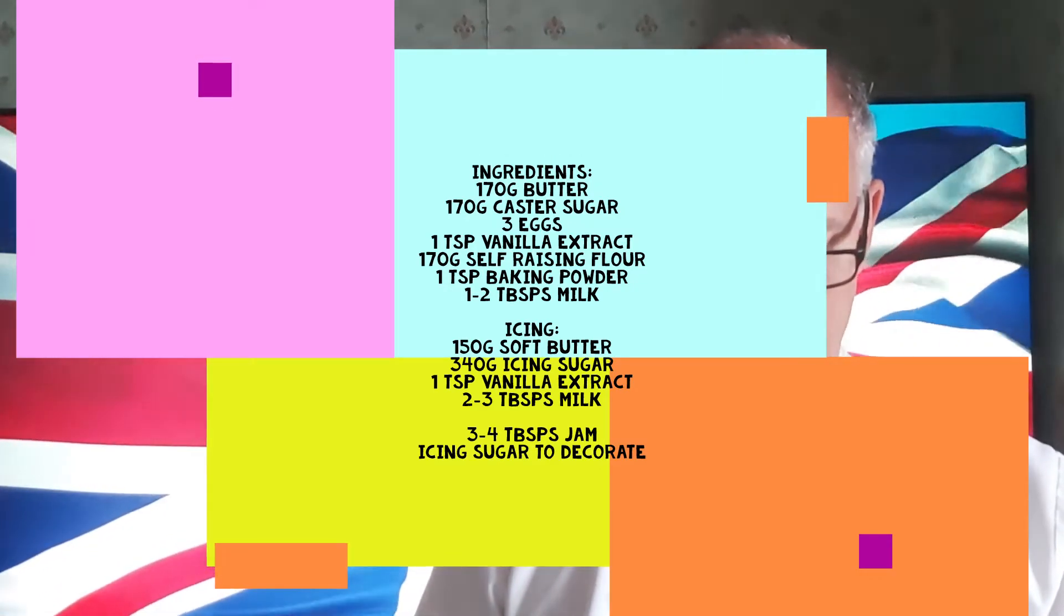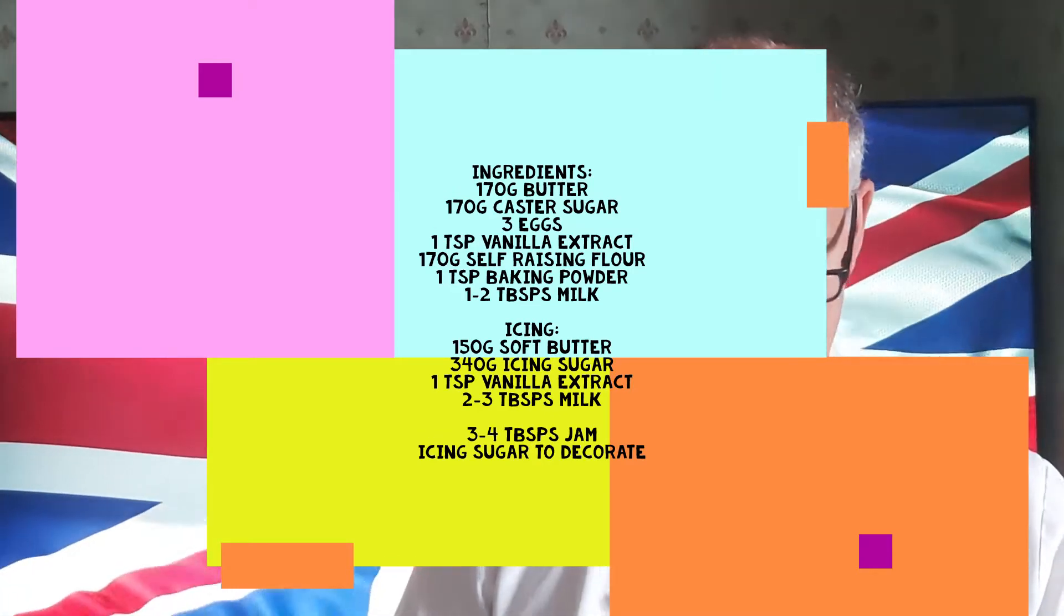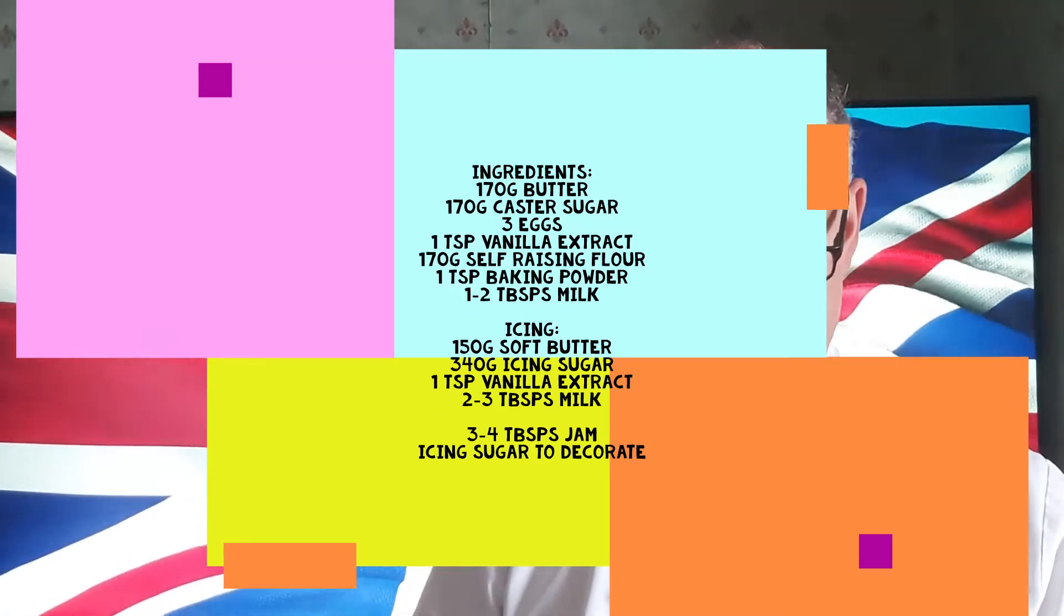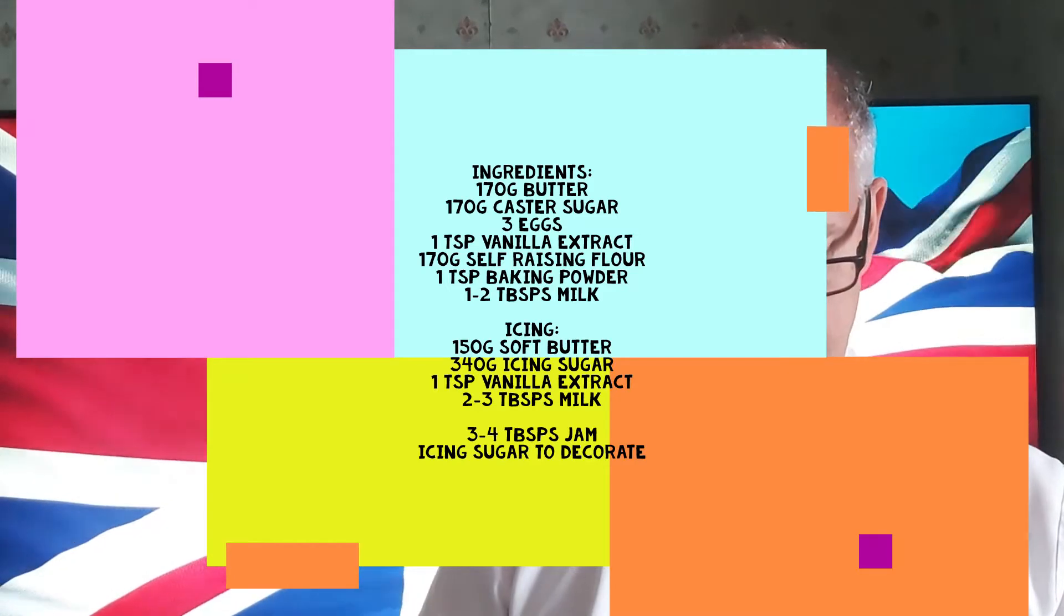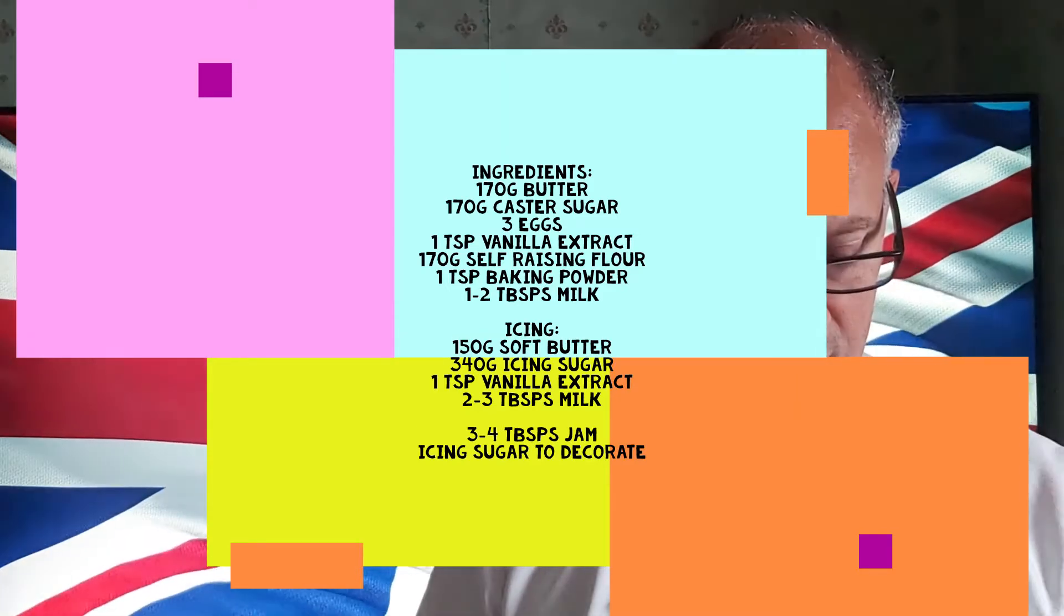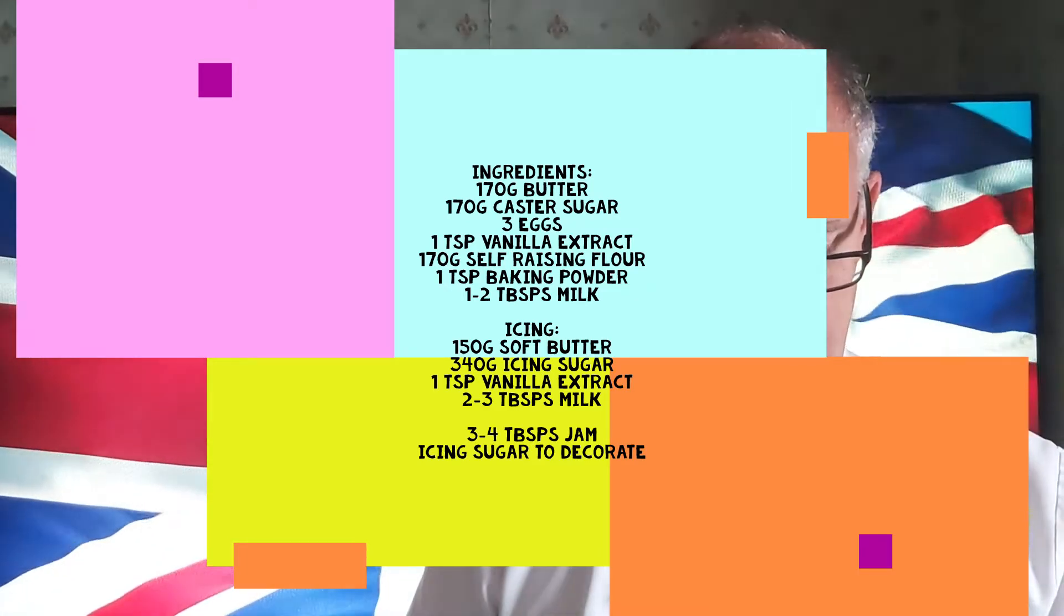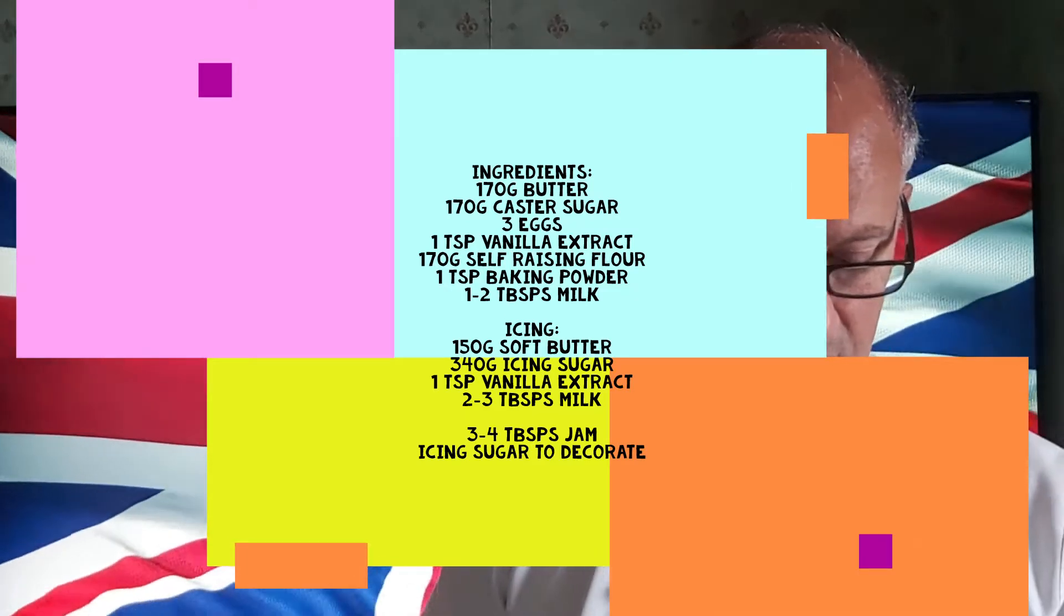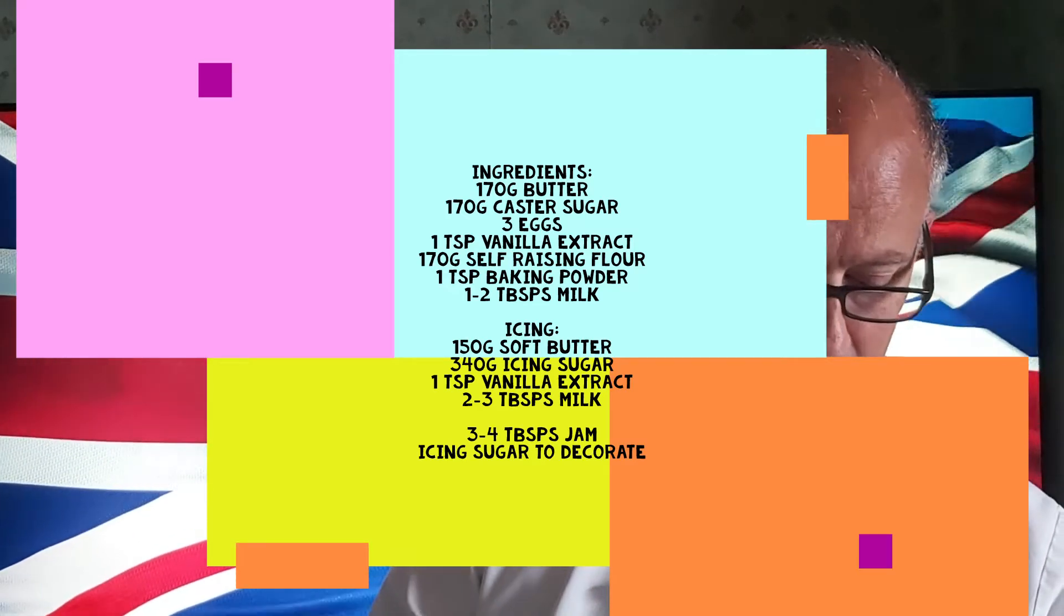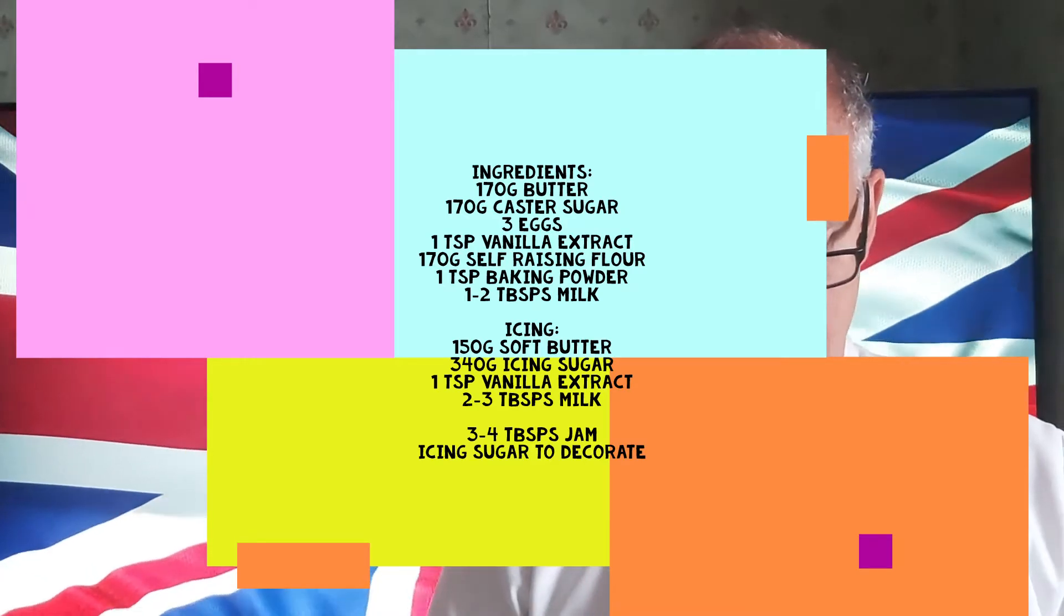For the icing you can use buttercream or fresh cream. If you're using buttercream use 150 grams of butter, 340 grams of icing sugar, 1 teaspoon of vanilla extract, 2-3 teaspoons of milk and about 3-4 tablespoons of jam and some icing sugar just to decorate afterwards.